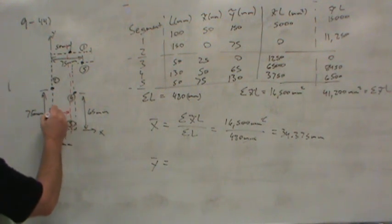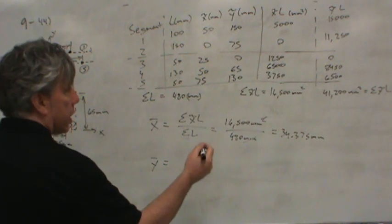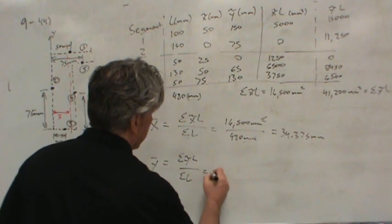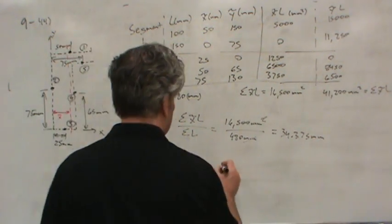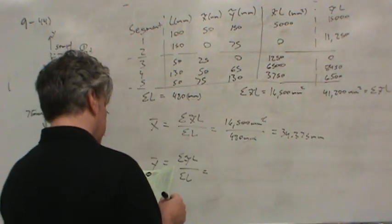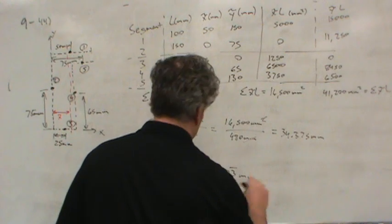So that is, in fact, x-bar. And then y-bar would be the sum of the y-tilde L's divided by the sum of the lengths. I won't write it all in, you see the sum there, and you've already seen the sum of the lengths.